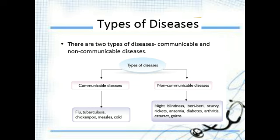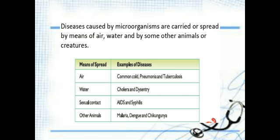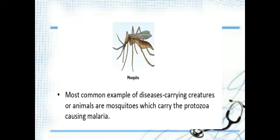Today we are going to see about the spreading of diseases — means of spreading of diseases — that is, how the communicable diseases can be spread from one person to another. They can spread with the help of mosquitoes, air, water, and objects the infected person uses. These are the mediums through which disease may pass from one person to another.